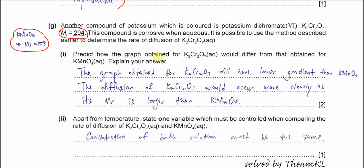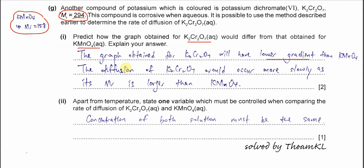Part 1: predict how the graph obtained for potassium dichromate would differ from the one obtained for KMnO4. What we expect is the K2Cr2O7 will actually move slower because it's larger. Therefore, the graph that we obtain will have lower gradient than KMnO4, the rate of diffusion is lesser. KMnO4 is smaller, it can move faster, so it has larger gradient. This is the key, it's about the size.